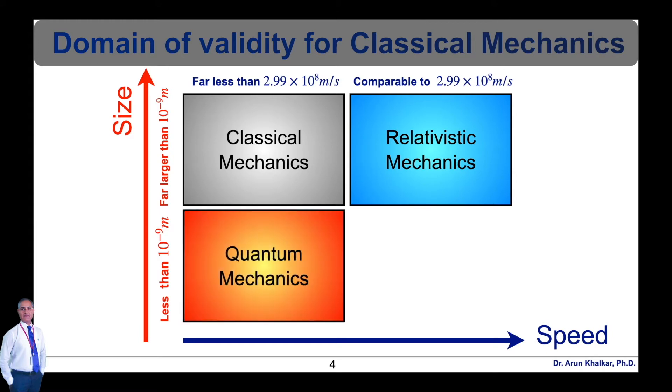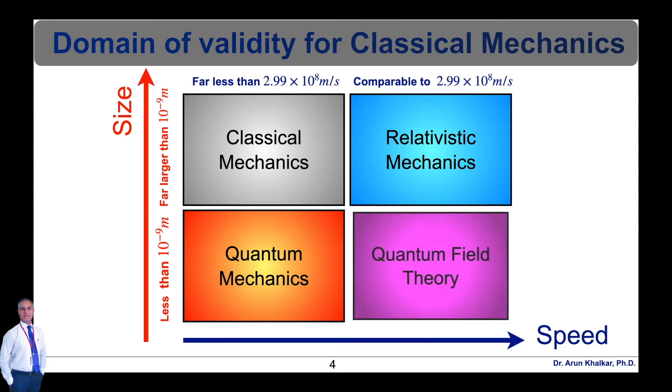Next domain is quantum mechanics with size less than 10 raised to minus 9 meter and with speed less than 2.99 × 10 raised to 8 meter per second. Next is quantum field theory with size less than 10 raised to minus 9 meter and with speed comparable to 2.99 × 10 raised to 8 meter per second.